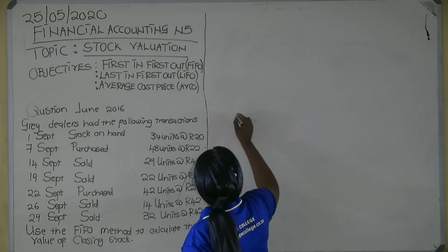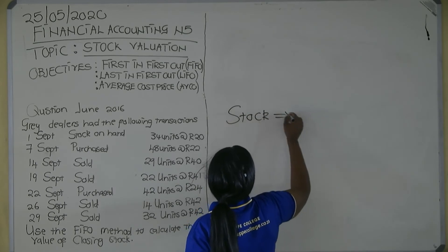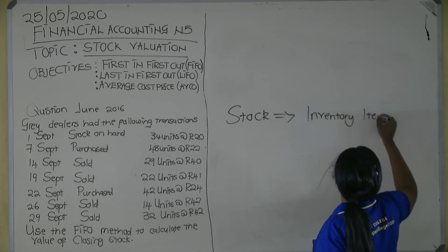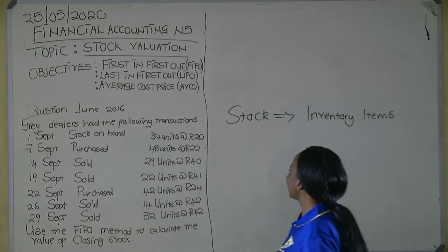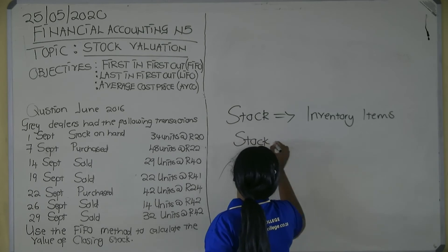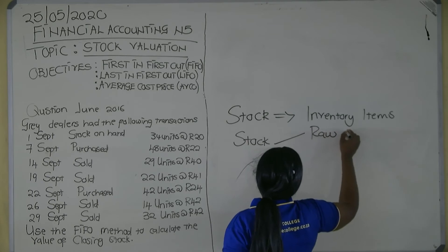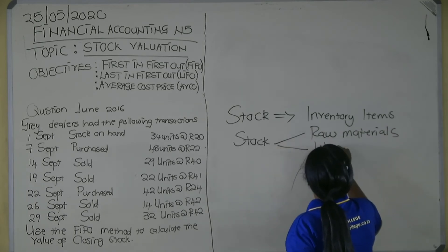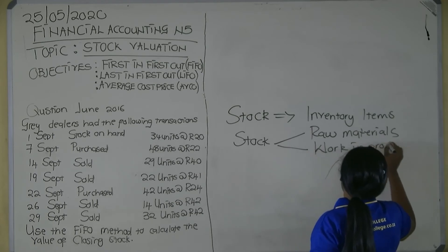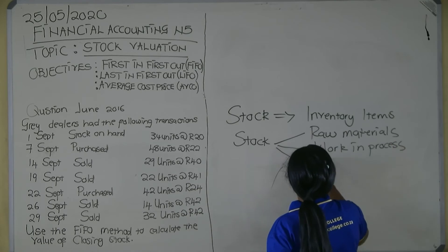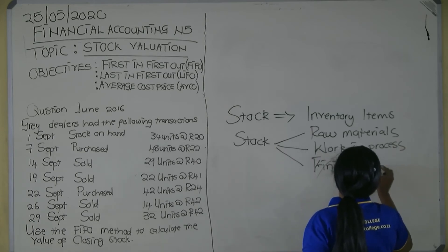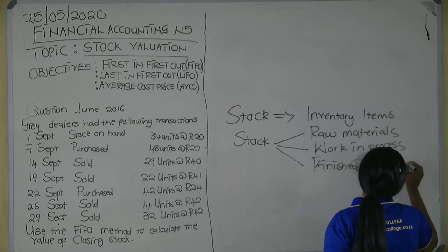Stock refers to inventory items. Stock comes in three categories. The first one is raw materials. The second one is work in process. The third one is finished goods, or merchandise.